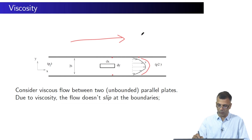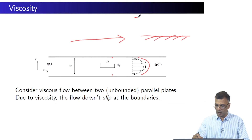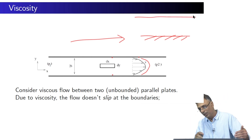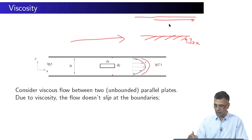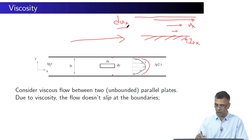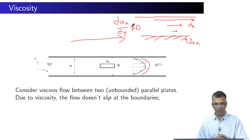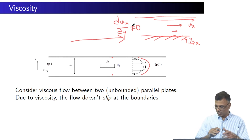This immediately reminds us of the diagram we used to draw: an unbounded surface, a free surface of the fluid, the fluid flowing in the x-direction with y upward, and the velocity streamlines showing a gradient. We have drawn this many times — it's essentially the same thing we're talking about.